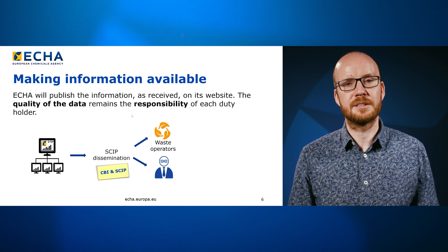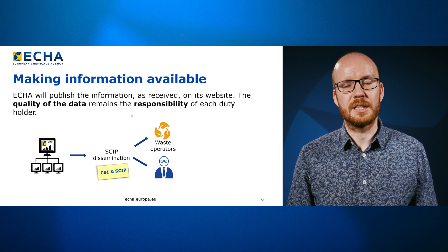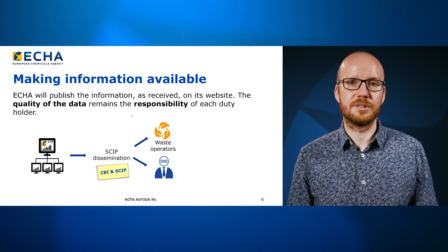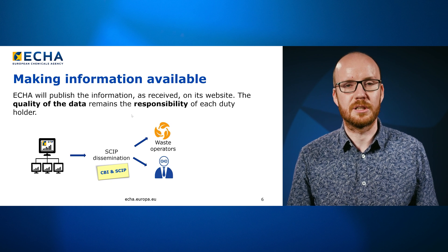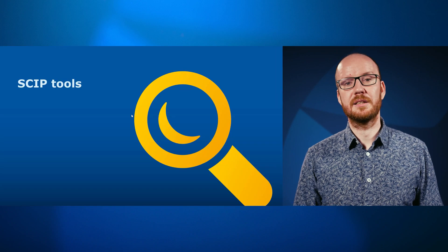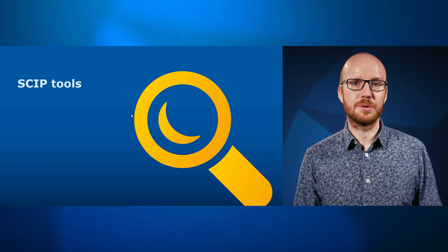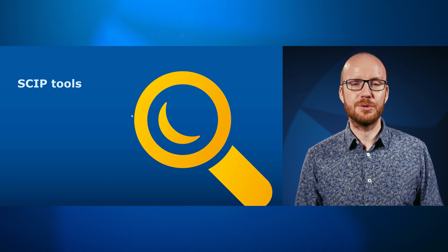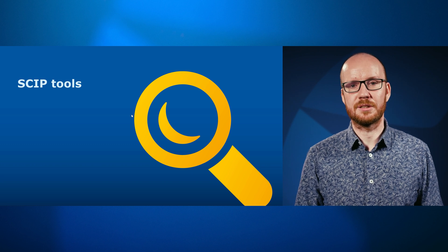ECHA will make sure from its side that confidential business information is not requested, and if it would anyway be included in the information submitted, then it will not be published. Let's have a look at how SCIP notifications can be made towards the SCIP database — what you have to do to make such notifications and which tools are available.